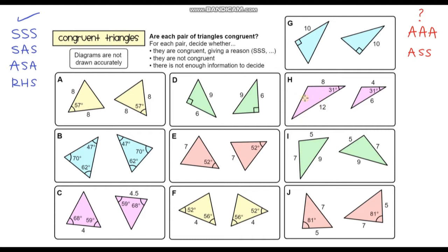Let's start off with question A. What information have we got? Well, we've got two of the side lengths which are the same, and notice how the angle in between them is also the same. So we can say that these two triangles have the same side, angle, and side in that order — SAS. So those two triangles are definitely congruent, and the reason is SAS.